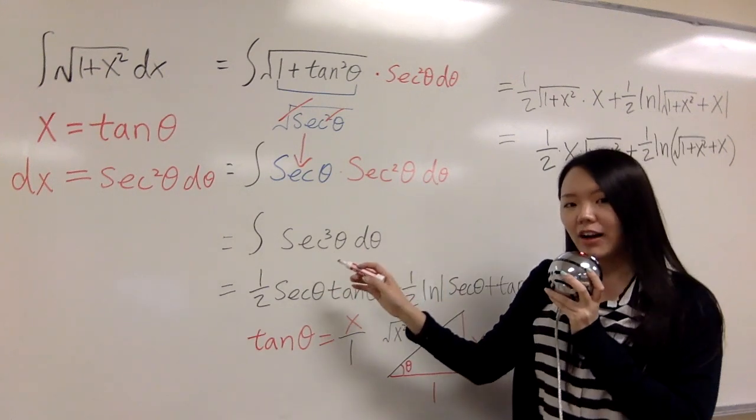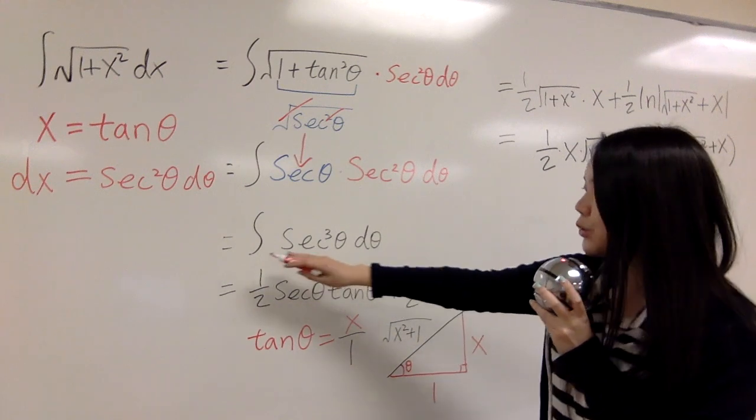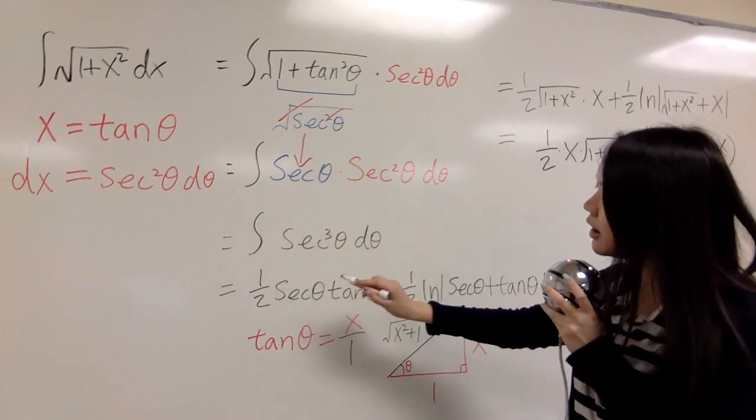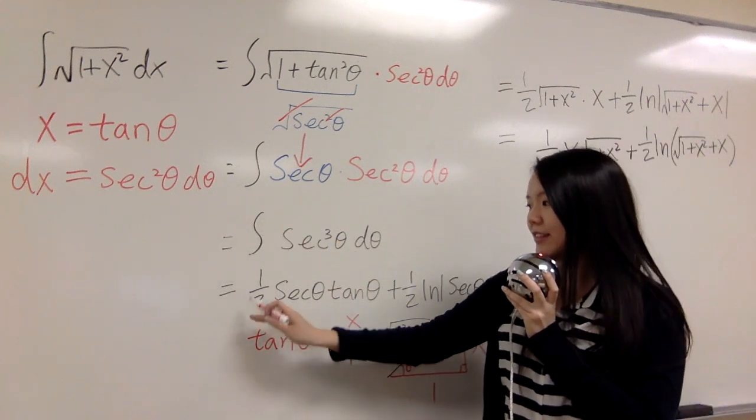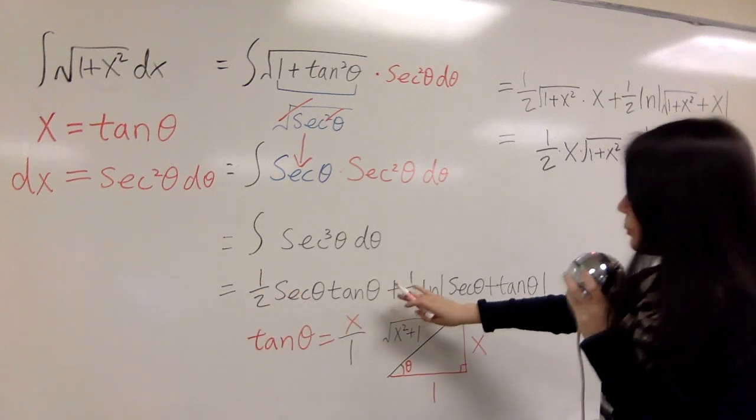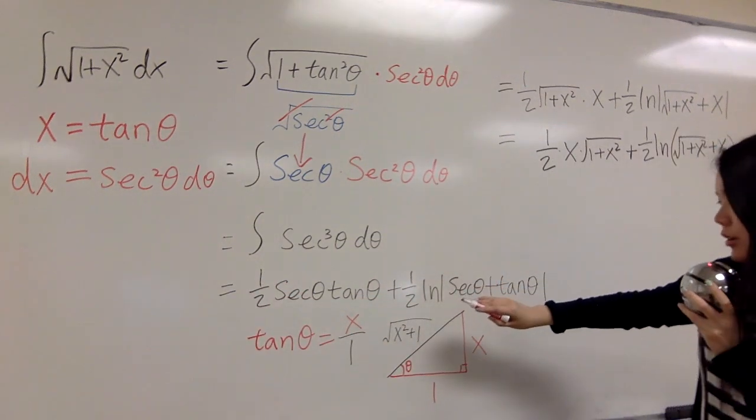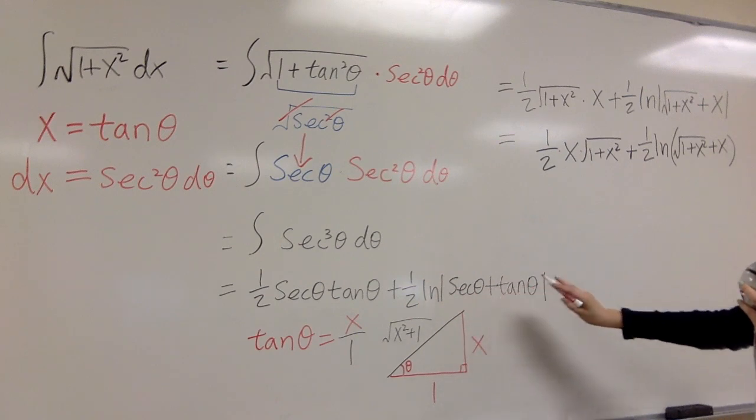And you can check out the description on how to integrate secant cubed, and the result is one-half secant theta tangent theta plus one-half ln of secant theta plus tangent theta.